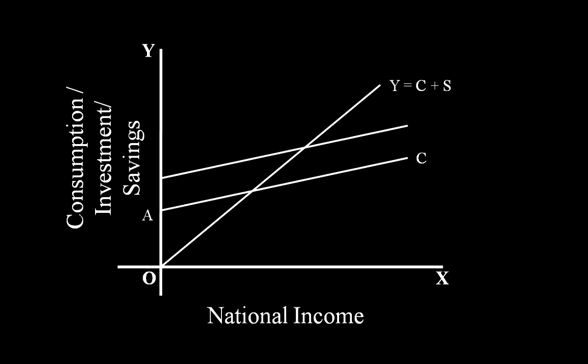C + I is obtained by vertically adding the Investment Function to the Consumption Function. The business community plans to invest a fixed sum at different levels of national income. The C + I curve is parallel to the Consumption Function curve C and represents the Aggregate Demand Curve.